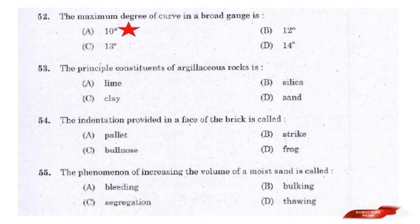Question: The principal constituent of argillaceous rock is — options: lime, silica, clay, sand. Answer: Option C — Clay. The principal constituent of argillaceous rock is clay.